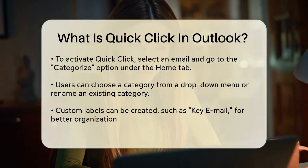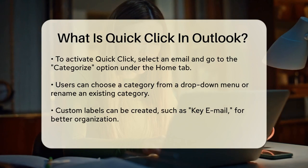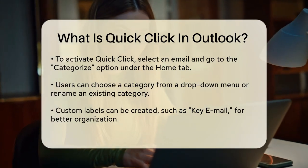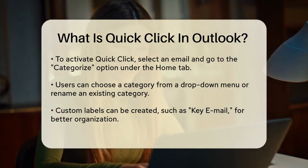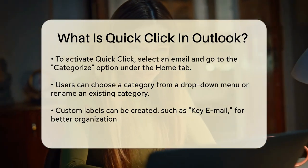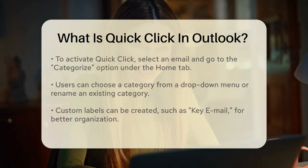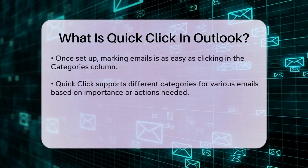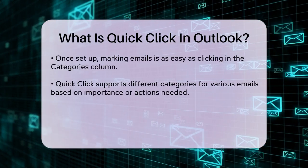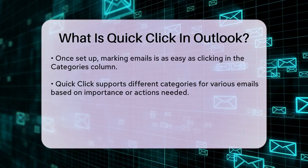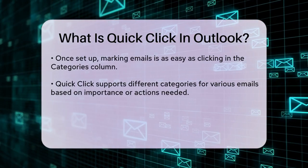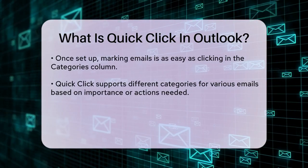Once you've set up your Quick Click category, you can mark emails with this category by simply clicking in the Categories column next to the email. This is much faster than going through the full categorization process each time. The Quick Click feature is also versatile.